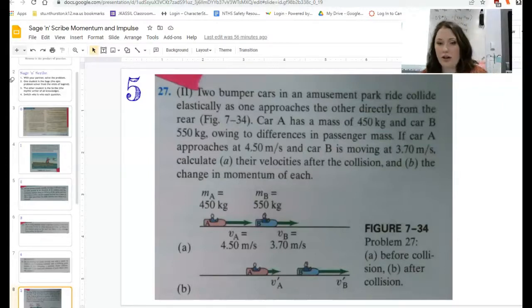I'm writing that down, and car B has a mass of 550 kilograms. If car A approaches, so that initial velocity for car A, if car A approaches at 4.5 meters per second, and car B is moving at 3.7 meters per second, and they're going in the same direction according to my diagram there, I want to figure out their velocities after the collision and the change in momentum for each. So I'm just going to do the velocities part because once you have that, you can figure out the change in momentum just by using conservation of momentum.